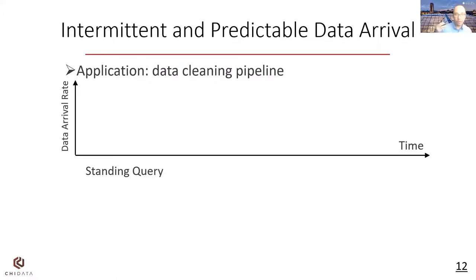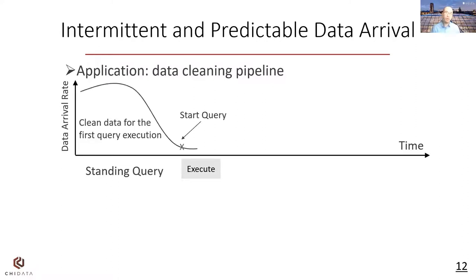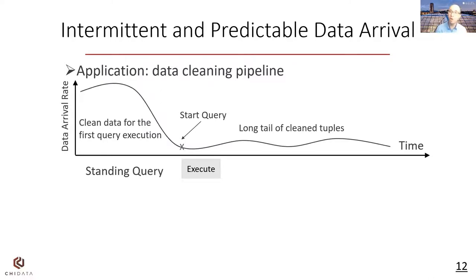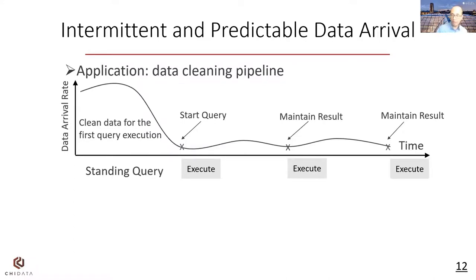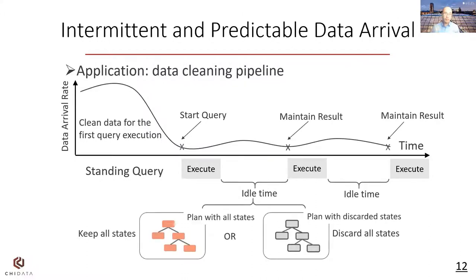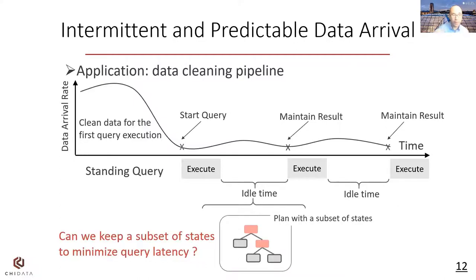Let's look at how a standing query is executed over time for this data arrival pattern. When the clean data arrives, we start the query for the first execution, followed by a long tail of clean tuples arriving at a low rate. Users tend to maintain results lazily. There is an idle time between executions where there is no data to process and no scheduled executions. Prior approaches either keep all intermediate states to lower query latency or discard all states to save memory. So we ask: can we keep a subset of states to reduce memory consumption when the query is inactive, and then use those saved states to quickly process new data to lower query latency?